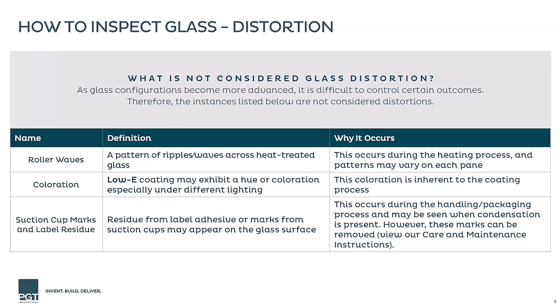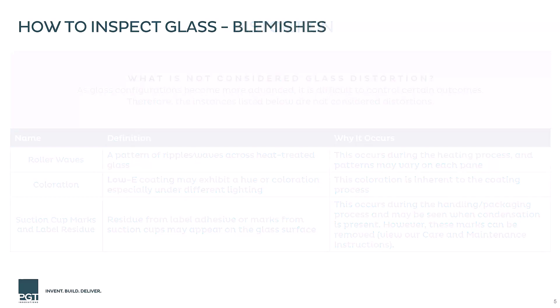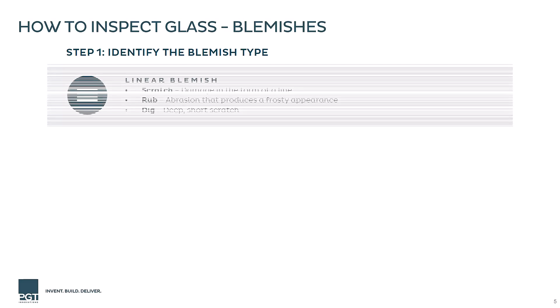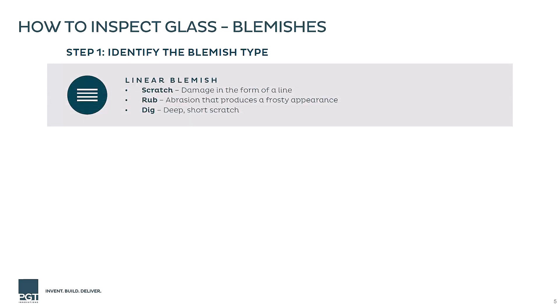However, it should be noted that suction cup or label marks can be removed. Another type of imperfection that can occur is a blemish. These can be sorted into two categories: linear blemishes or point blemishes. Linear blemishes can be caused by a scratch, rub, or other abrasion forming a longer imperfection.